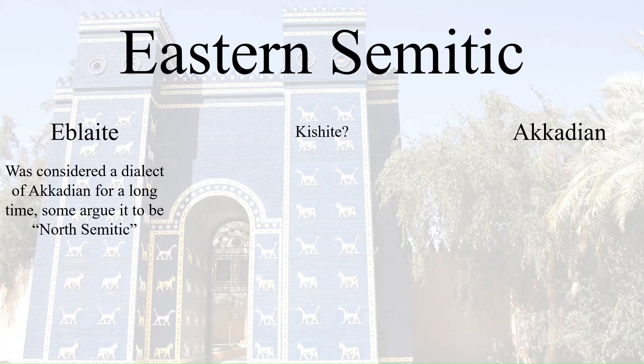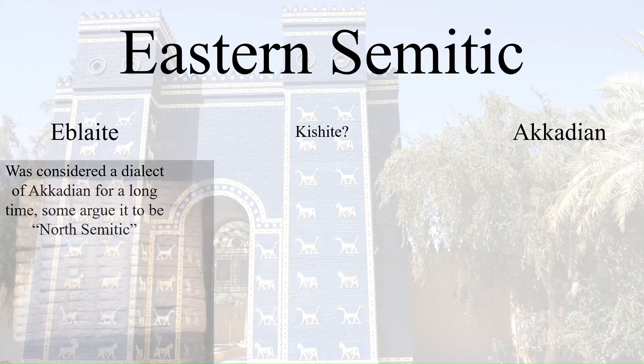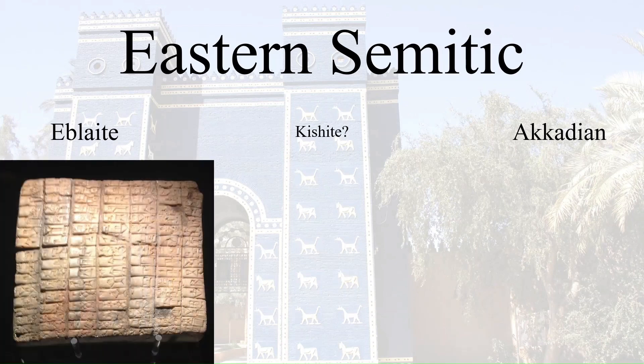Some linguists also argue that Eblayat is potentially its own sub-branch, North Semitic, but similar to Kishite, there isn't much evidence in favour of it. Eblayat was written in cuneiform, just like Akkadian.